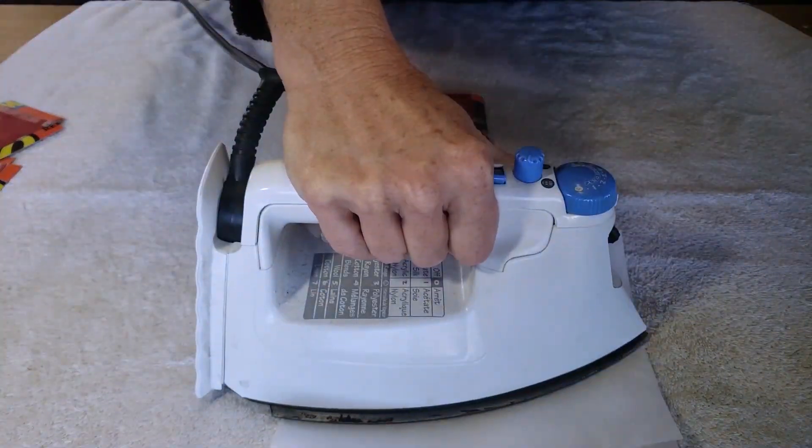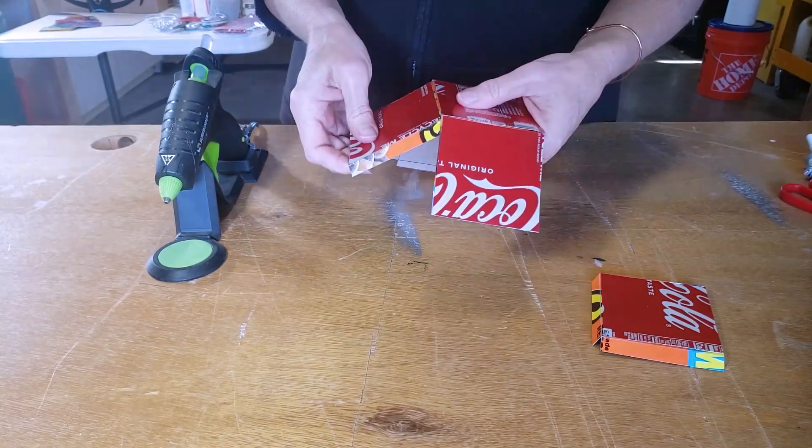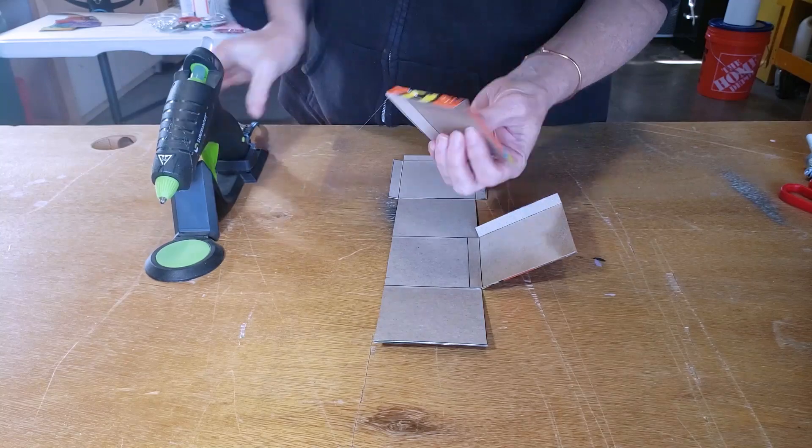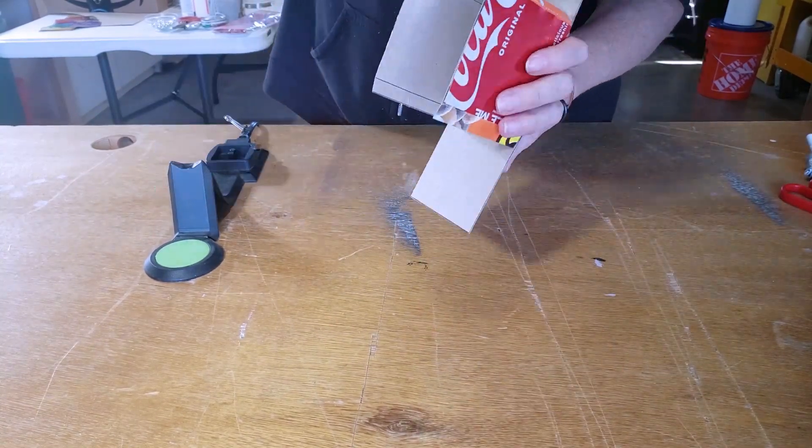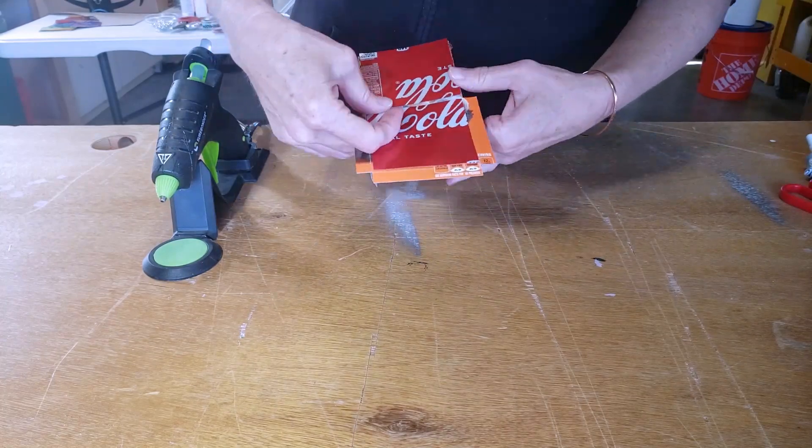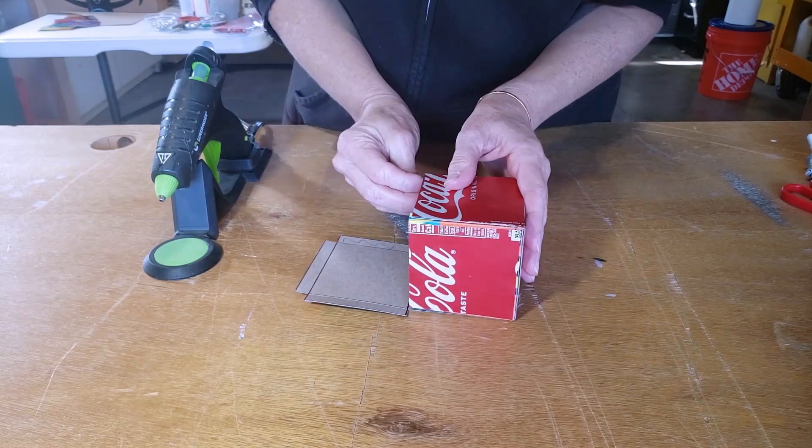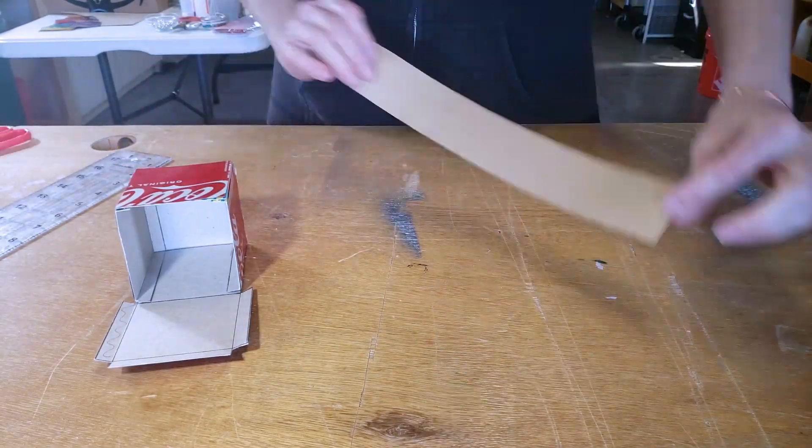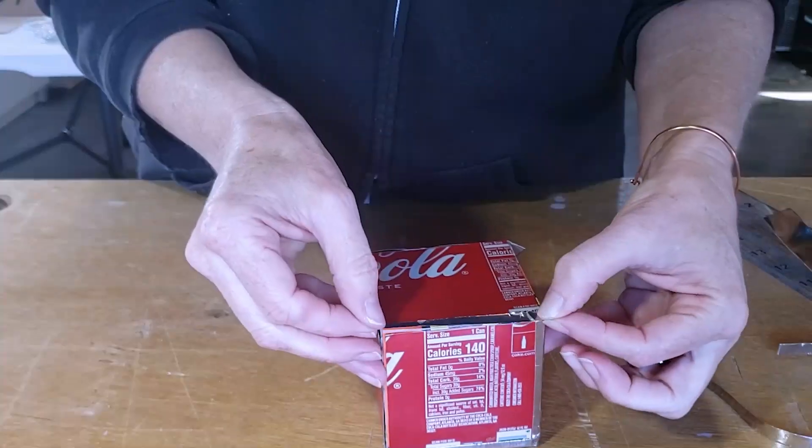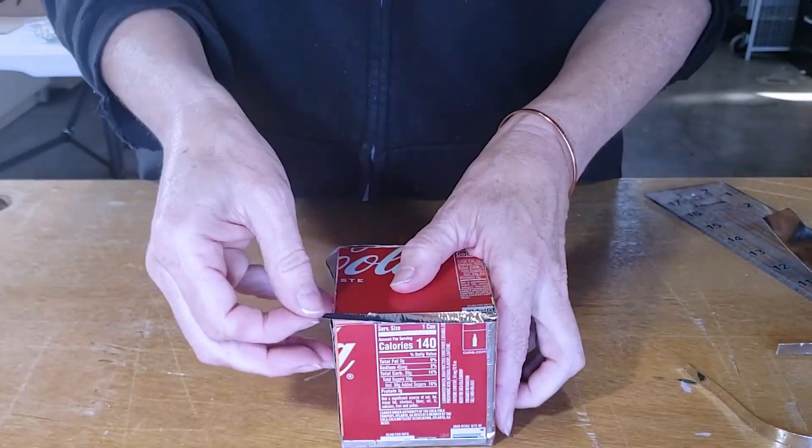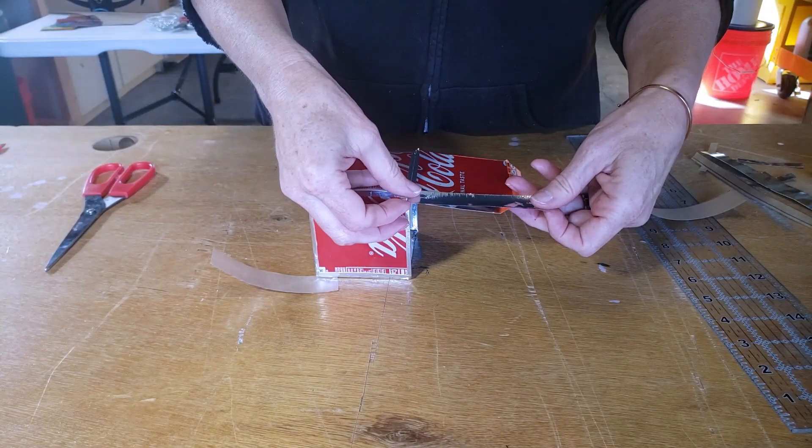And you want to be sure just to lift the iron straight up and down and not move it around so that you're not moving the pieces. Once the glue has cooled down the box can be folded and glued together with the hot glue. To finish the box I'm using five 1/8 inch strips of metal tape to cover the edges and corners and seams and I used wider pieces of the metal tape to cover the top tab pieces.